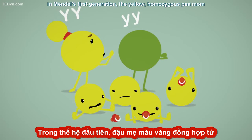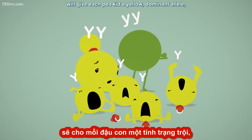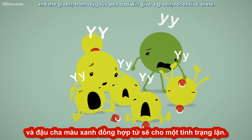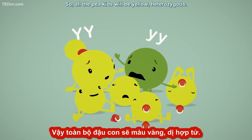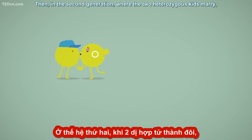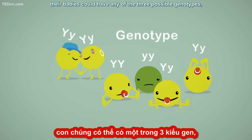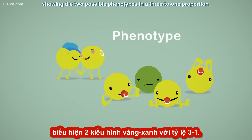In Mendel's first generation, the yellow homozygous pea mom will give each pea kid a yellow dominant allele, and the green homozygous pea dad will give a green recessive allele, so all the pea kids will be yellow heterozygous. Then in the second generation, where the two heterozygous kids mate, their babies could have any of the three possible genotypes, showing the two possible phenotypes in a three to one proportion.